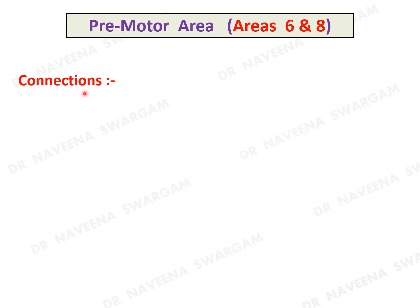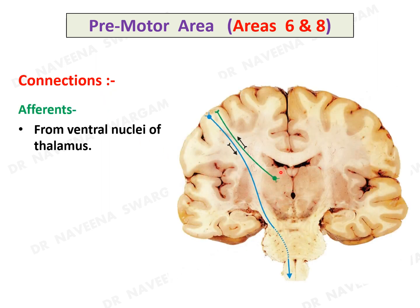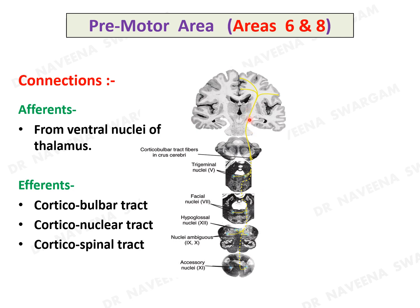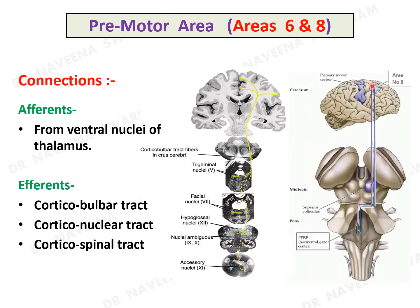Connections of the premotor area are similar to the primary motor area. It receives major afferents from the ventral nuclei of the thalamus. Efferents form corticobulbar, corticonuclear, and corticospinal tracts connecting with different cranial nerve nuclei in the brain stem. Area 8 is also connected to the superior colliculus of the midbrain and horizontal gaze center of the reticular formation in the pons.